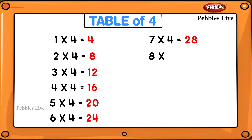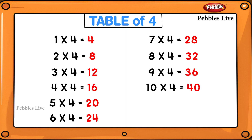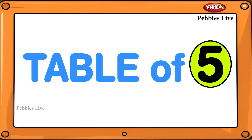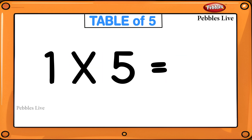8 fours are 32, 9 fours are 36, 10 fours are 40, 11 fours are 44, 12 fours are 48. Table of 5: 1 fives are 5.